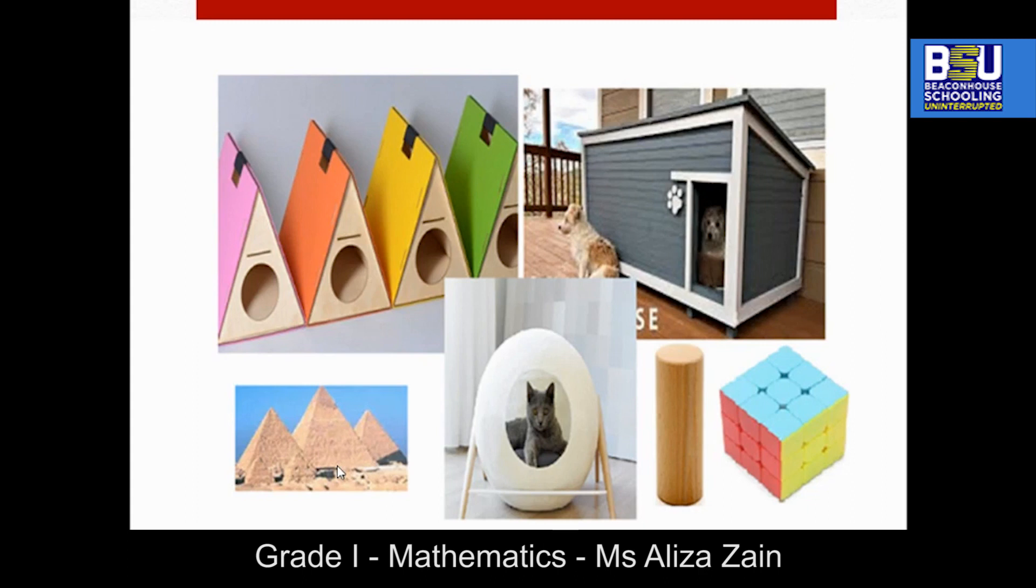Okay students, let's talk about the edges. The edge of a 3D shape is a line where two surfaces meet each other. As you can see in this cube, we have a total of 12 edges. Now, what about the cylinder? What do you think? How many edges does this cylinder have? Yes, it has a total of two edges. And what about this cat house? This shape doesn't have any edge.